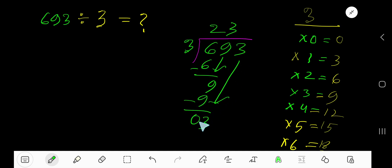Bring down 3. 3 goes into 3 how many times? 1 time. 1×3=3, subtract 0. Our remainder is 0, so we are done. 231 is our answer.